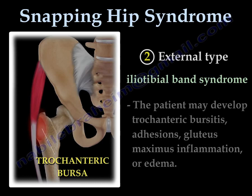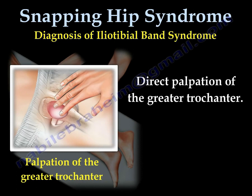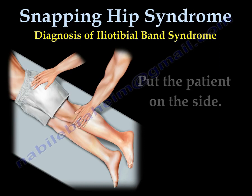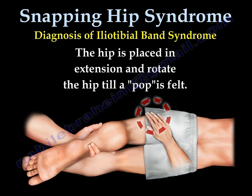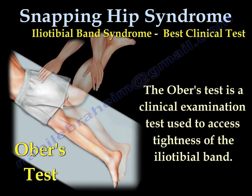Diagnosis of iliotibial band syndrome involves direct palpation of the greater trochanter. Put the patient on the side, put the hip in extension, rotate the hip and feel the pop. The best clinical test is Ober's test, which assesses the tightness of the iliotibial band.